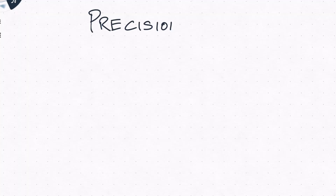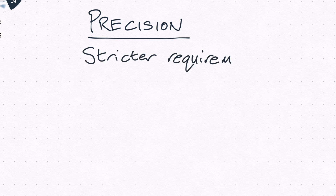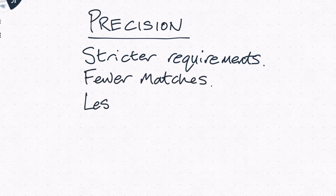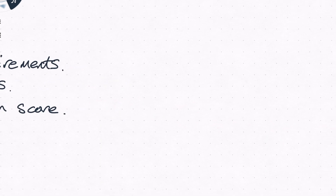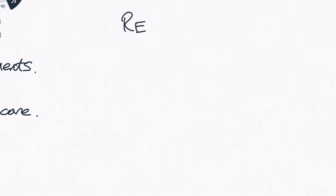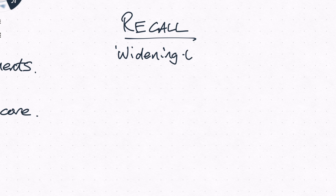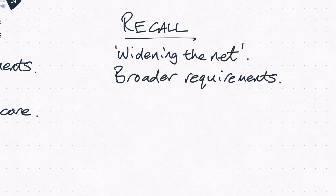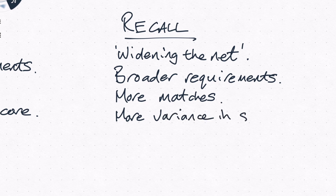Precision and recall are two extremes of a query spectrum. At the precision end, you've been very precise with your criteria with very specific requirements for documents that need to match. Precise queries won't match many documents, but the ones that you do match will be exactly what you're looking for, and the score differences between the hits will be small. At the opposite end, recall, is when you're casting a very wide net when looking for matches. The requirements will be much looser and will result in more hits. Those hits will still match your query, but because your query is less strict, the hits will match to varying degrees and the score differences between them will be much larger.